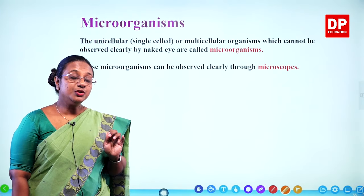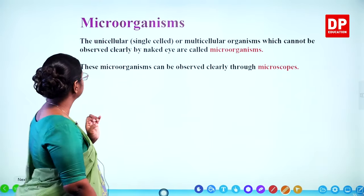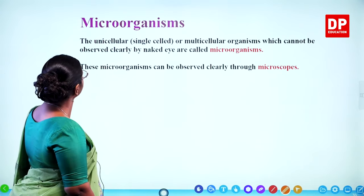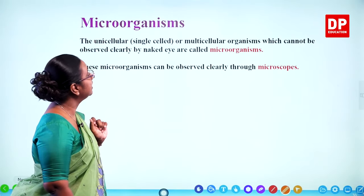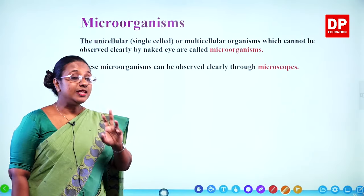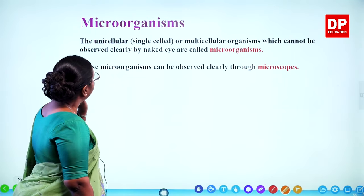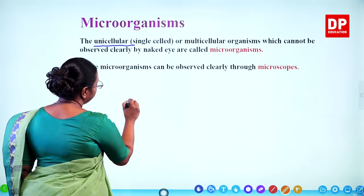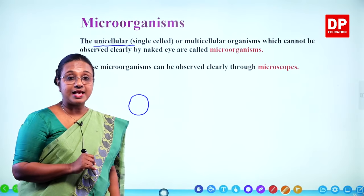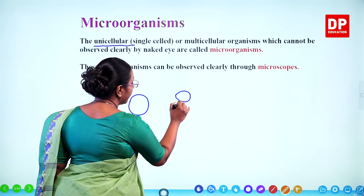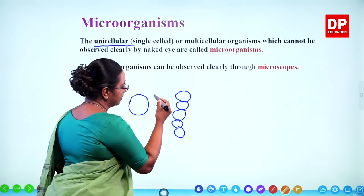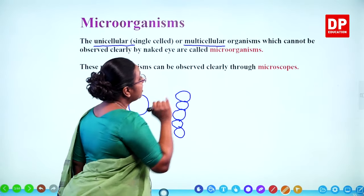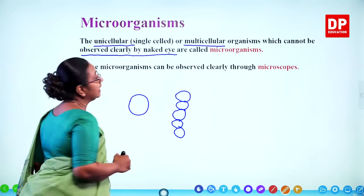Microorganisms: the unicellular, single-celled or multicellular organisms which cannot be observed clearly by the naked eye are called microorganisms. It can be just one cell, or multicellular where many cells are connected together in different shapes. They cannot be observed clearly by the naked eye.